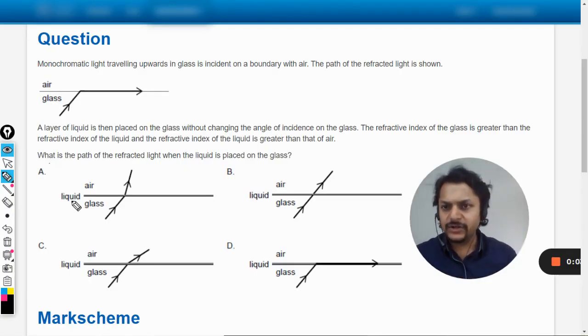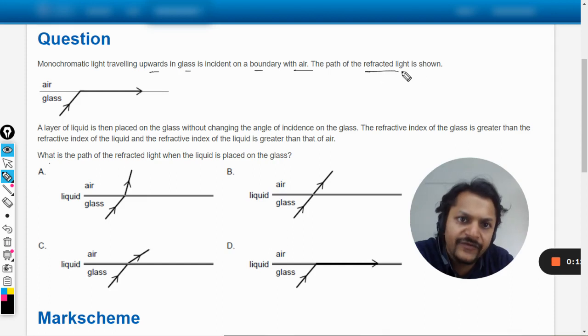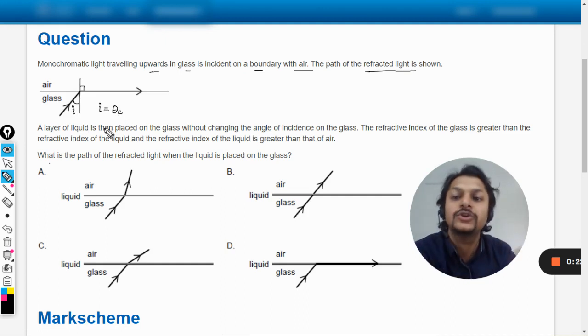Okay dear students, let us see what is there in this question. Monochromatic light traveling upwards in glass is incident on the boundary of air, and the path of refracted light is shown. So this is the angle theta critical - this is incident and this angle becomes 90 degrees, so the incident angle is equal to theta critical.